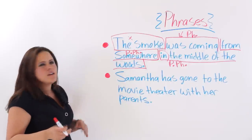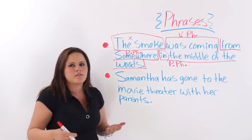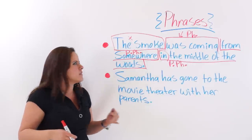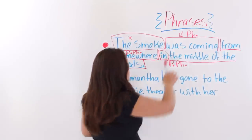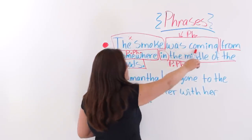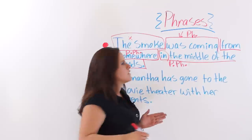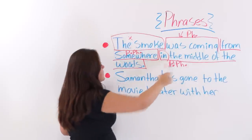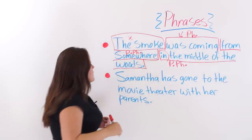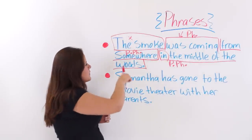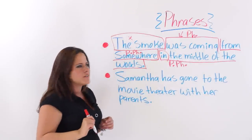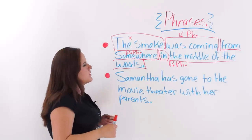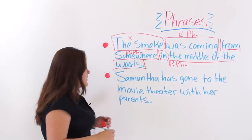As you can see, the phrases don't have a subject or a verb. 'Was coming' — that's a verb phrase, but it doesn't have a subject. 'From somewhere in the middle of the woods' — 'from somewhere' is a prepositional phrase, and 'in the middle of the woods' is another prepositional phrase.